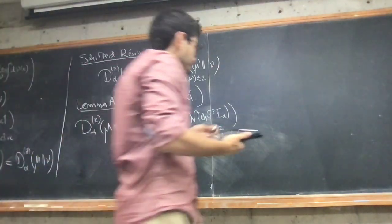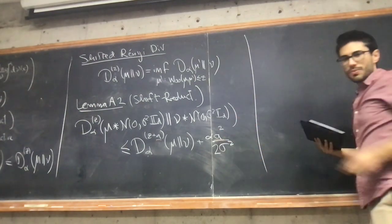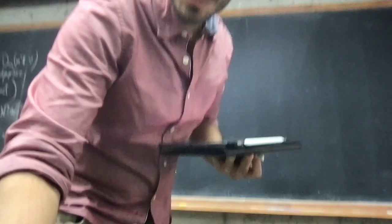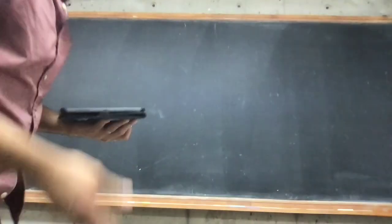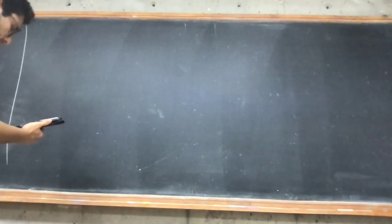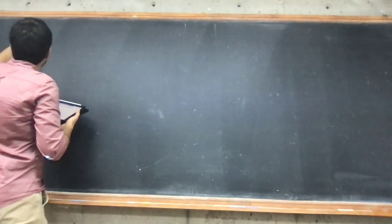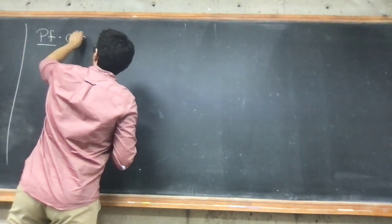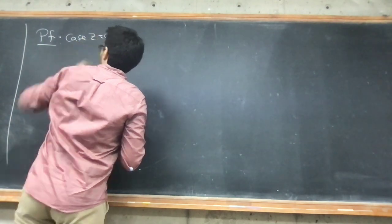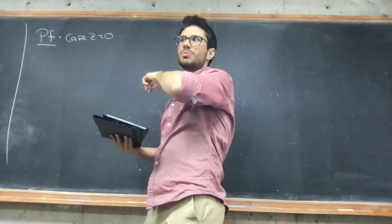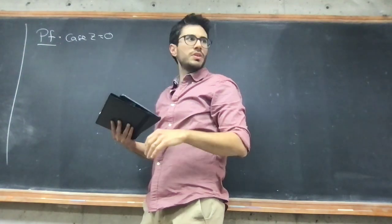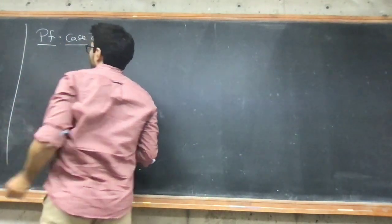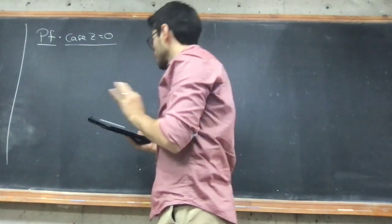This proof is a bit longer than the other ones. For the sake of time, let me do the proof for the case where z is equal to zero — the other one kind of reduces to this one and already explains most of the ideas. You can check the paper for the generalization; it's not much harder.